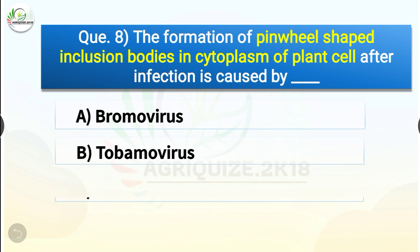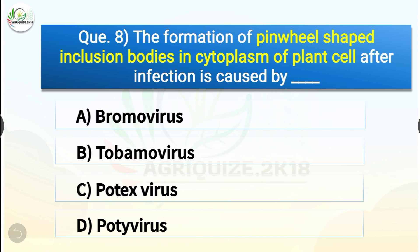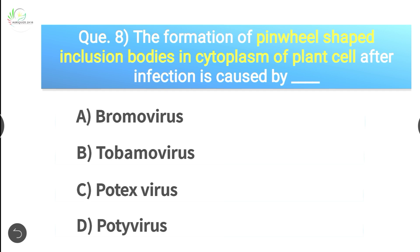Question number eight: The formation of pinwheel-shaped inclusion bodies in cytoplasm of plant cell after infection is caused by dash. The options are Bromovirus, Tobamovirus, Potexvirus, or Potivirus. The correct answer is option D, Potivirus. A unique feature shared by all plant viruses of the Potyviridae family is the induction of characteristic pinwheel-shaped inclusion bodies in the cytoplasm of infected cells.